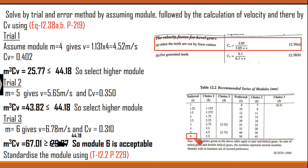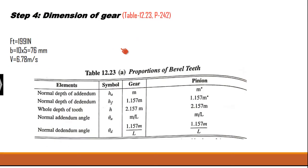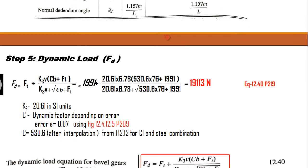So the module selected is 6. Using table 12.2, standard module 6 is available, so we adopt module 6 for the bevel gear. Step 3 is then the calculation of dimensions: we calculate Ft, B, and V. The proportion of the bevel teeth is calculated using equation 12.23, and after this we validate the design using dynamic load calculation.